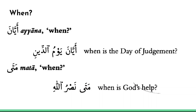There are two words for 'when' in Arabic: ayyaana and the more common word mata. So ayyaana yawm ud-deen means 'when is the day of judgment?' And mata nasrullahi means 'when is God's help going to come?' Mata is the more common of the two.